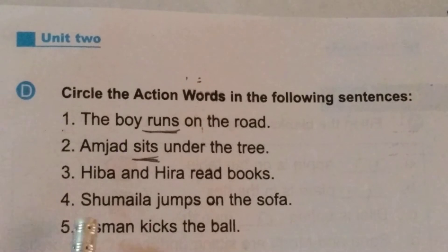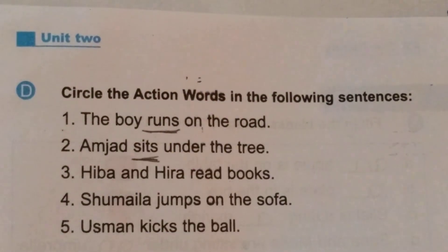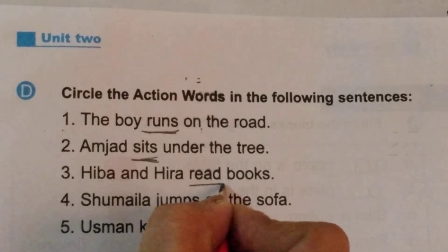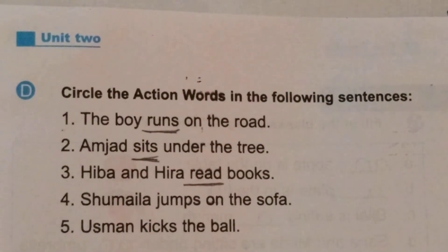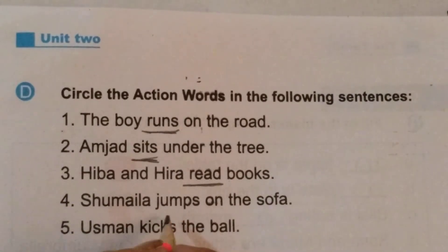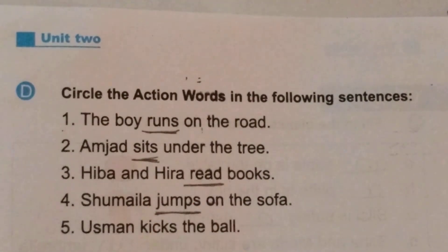Hibba and Hira read books. What are Hibba and Hira doing? They read books — the action of Hibba and Hira is 'read.' Shumayla jumps on the sofa. What is the action of Shumayla? She is jumping. So 'jumps' is an action word — Shumayla jumps on the sofa.